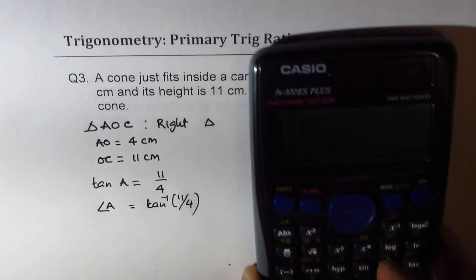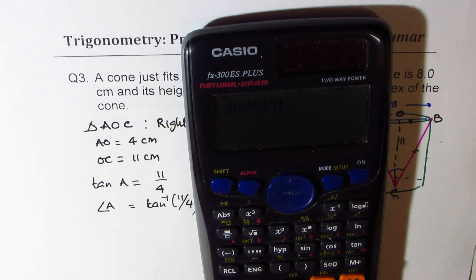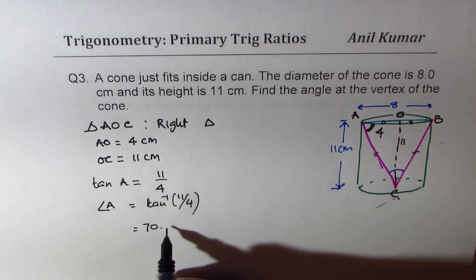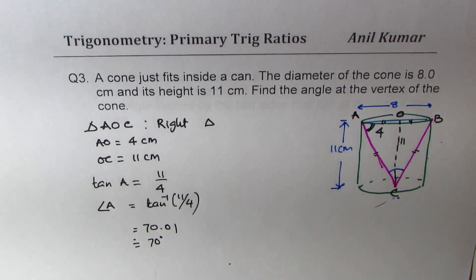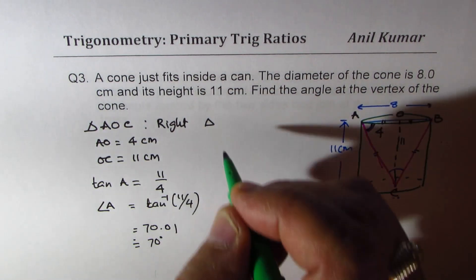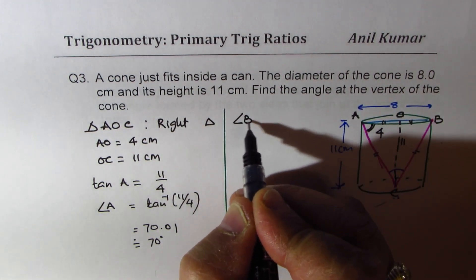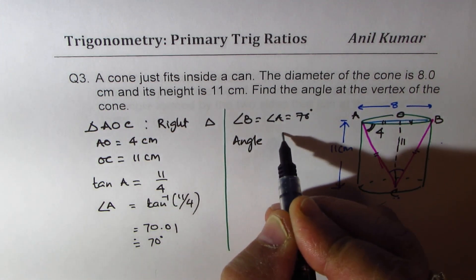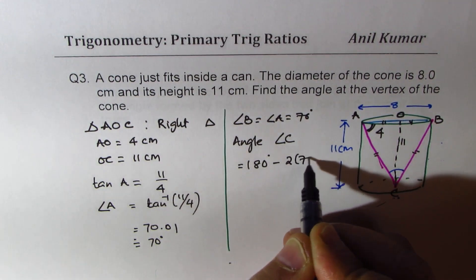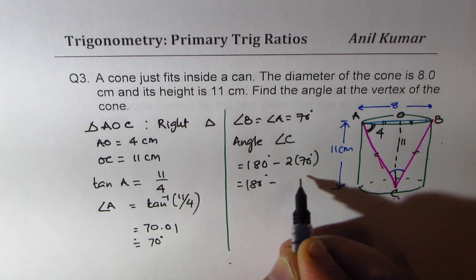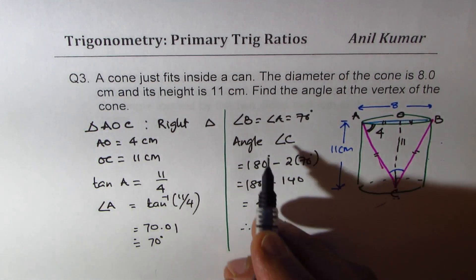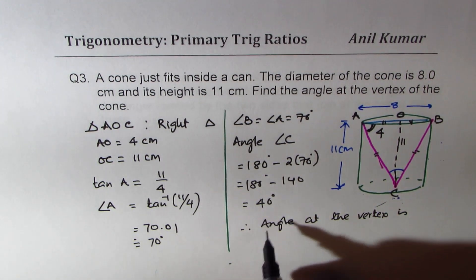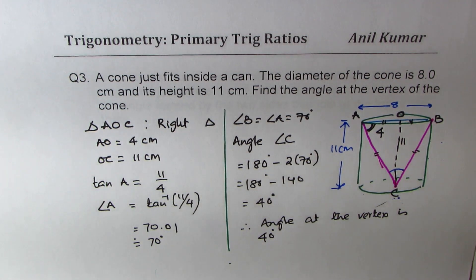Using the calculator — shift tan⁻¹(11 ÷ 4) — gives 70.01 degrees, so we approximate angle A to 70 degrees. Since this is an isosceles triangle, angle B also equals 70 degrees. Therefore, the angle at the vertex C = 180° − 2 × 70° = 180° − 140° = 40 degrees. So the angle at the vertex of the cone is 40 degrees. That is how you solve this question.